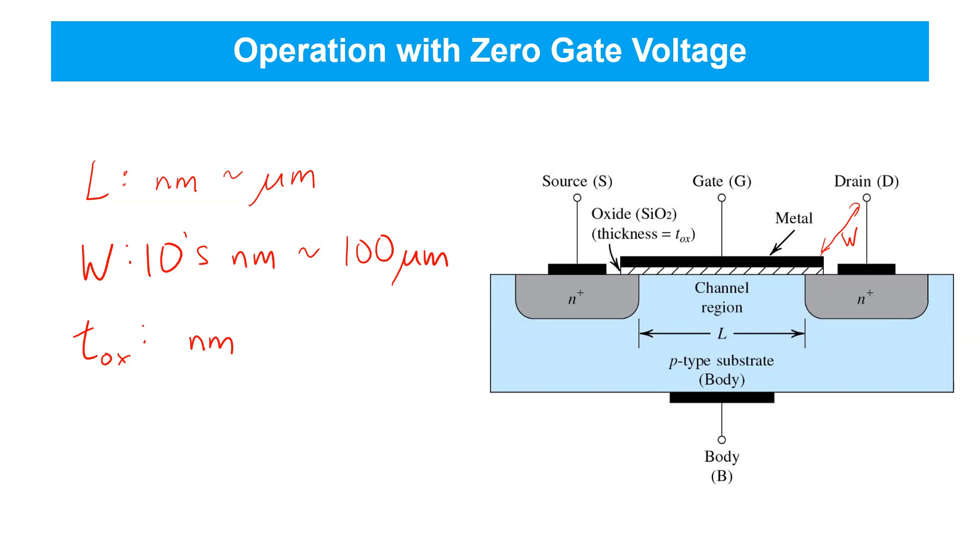Thus, we'll often short together the body and the source. To ensure both PN junctions between source and body and drain and body remain reverse biased, so no current flows into or out of the body, and we can consider the MOSFET as simply a three-terminal device.